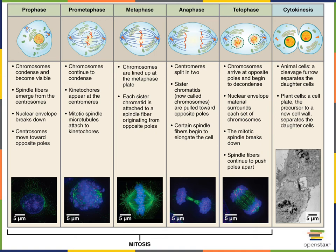Telophase occurs when the nuclear envelope reforms around the chromosomes and those chromosomes start to uncoil and loosen back into the uncoiled chromatin within the nucleus.